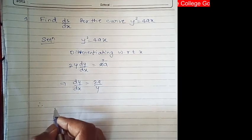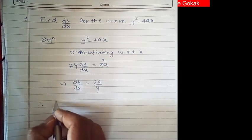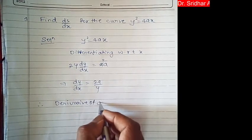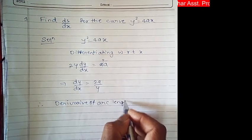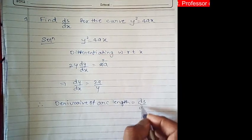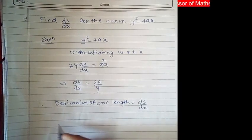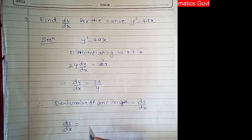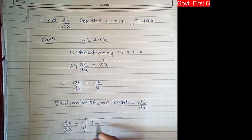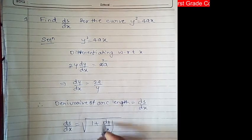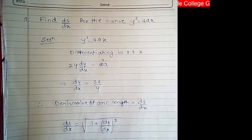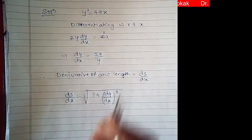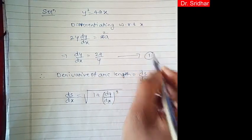Therefore, now we apply the formula for derivative of arc length. The derivative of arc length ds/dx is equal to the square root of 1 plus (dy/dx) whole square. Call this equation as 1.